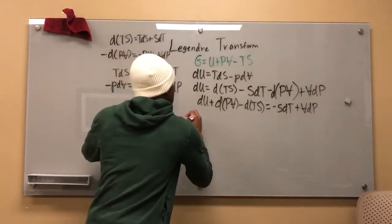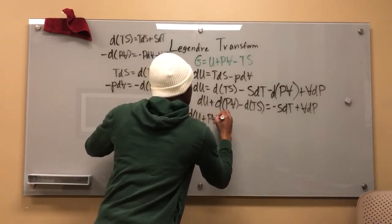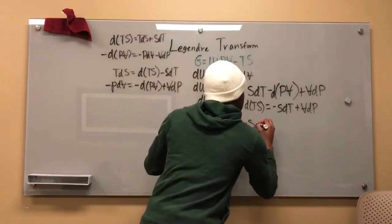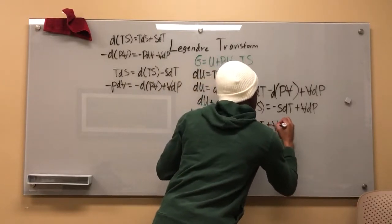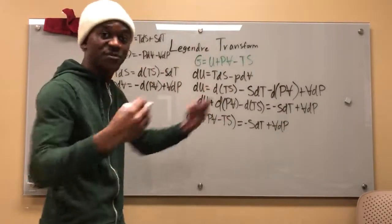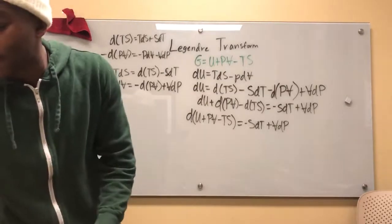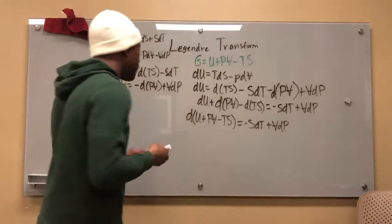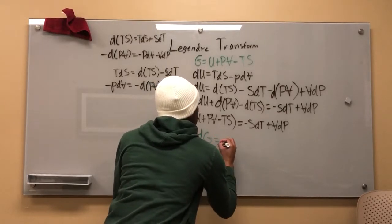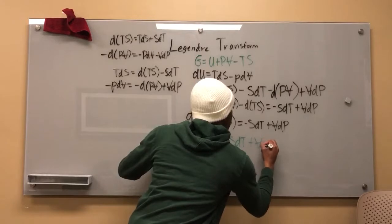Combining all of this, I can say that DU plus PV minus TS equals negative SDT plus VDP, right? What is this? Gibbs free energy, right? That being said, I can go ahead and say that the differential of Gibbs free energy is equal to negative SDT plus VDP.